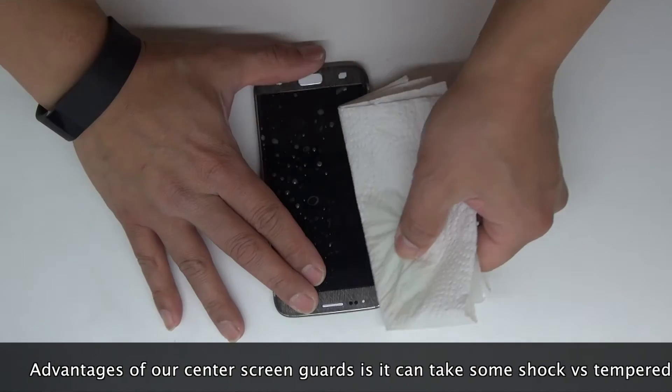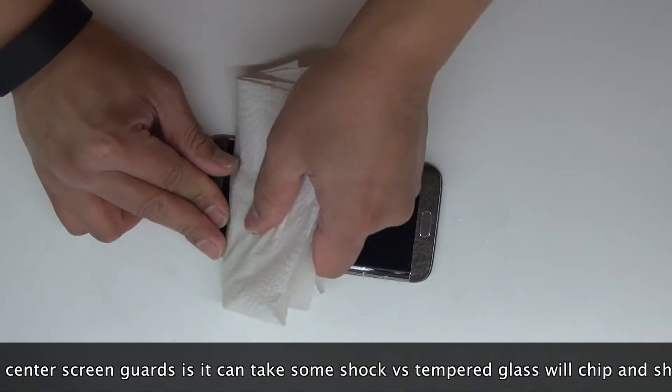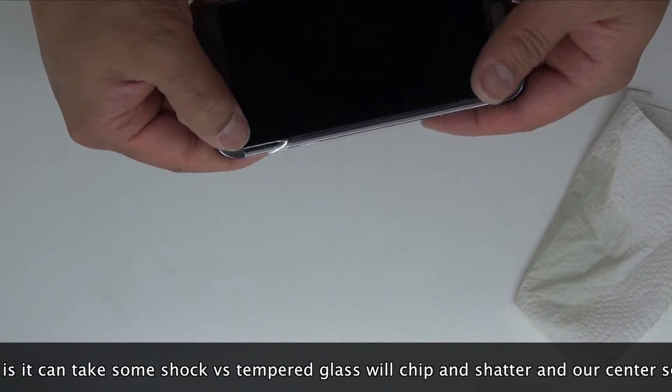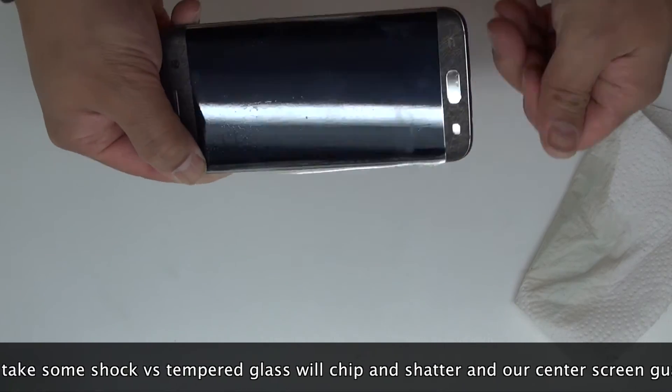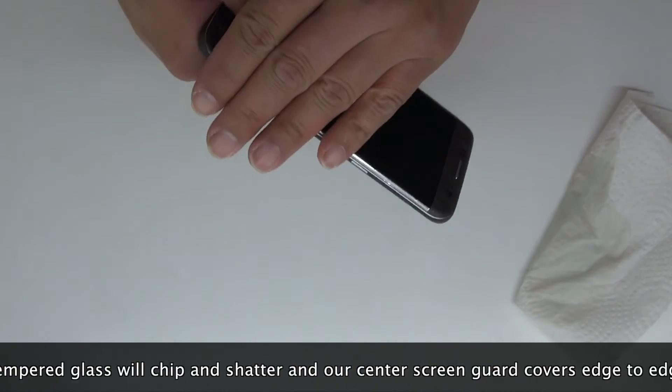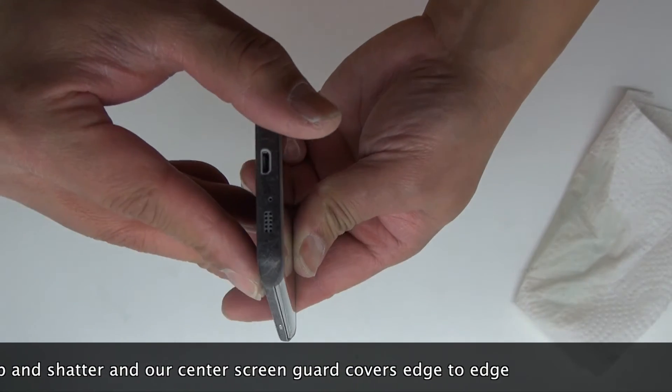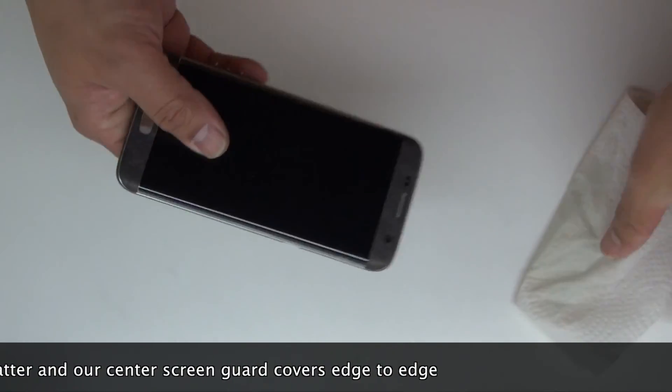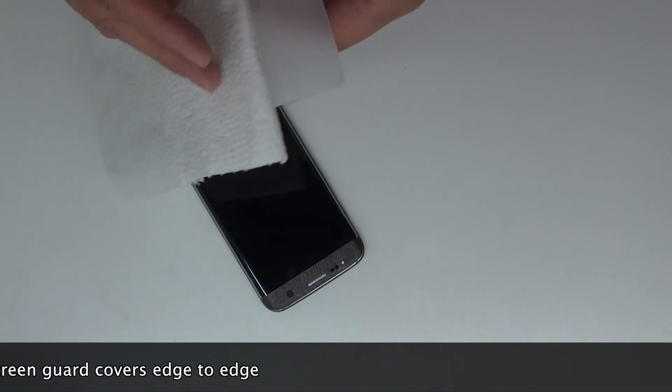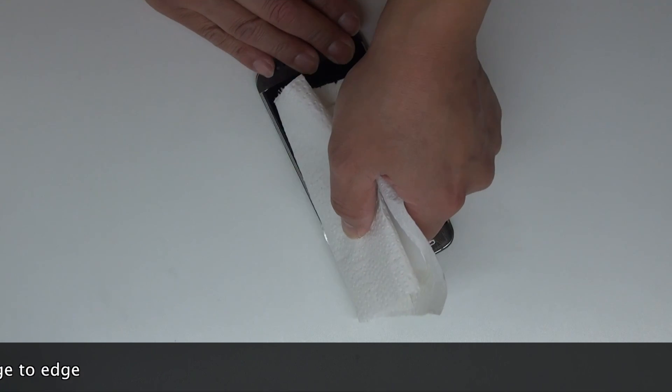Next, get a squeegee or credit card and wrap it with paper towel so you don't scratch it. As you see, I am dragging the squeegee and pushing the fluid out. You can let it naturally dry and press, or you can promote drying by using a household hair dryer, heating it and then pressing. I'm just going to do another round and finish it off.